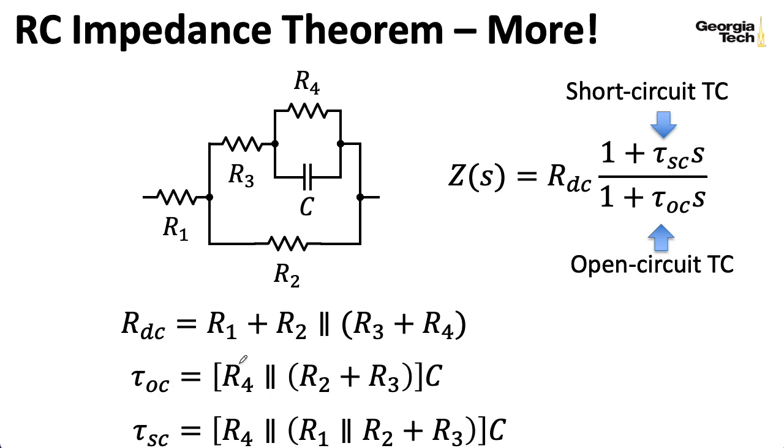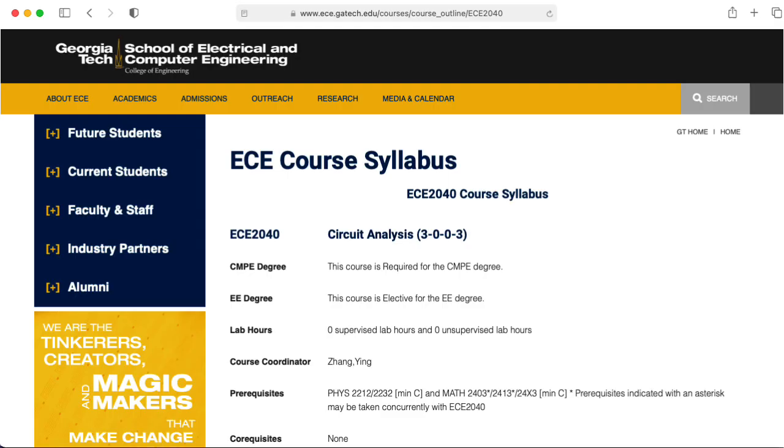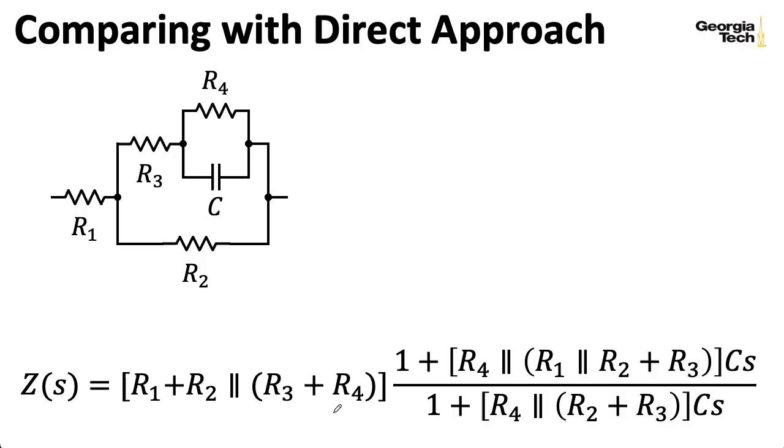Now, you don't have to use this theorem. In fact, I'm guessing that most students haven't seen this theorem. You can just use ordinary circuit theory from a class like EC2040. And let's try that. So this is the expression we computed using the theorem. We plug in RDC and the time constant for the short circuit case and the time constant for the open circuit case.